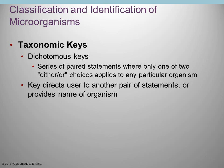Dichotomous keys are essentially flow charts used to help identify an unknown organism. Given a sample, you run tests and follow yes-or-no questions that separate groups down to one individual organism. You keep following the chart until you can say, 'Aha, that's what I have.'